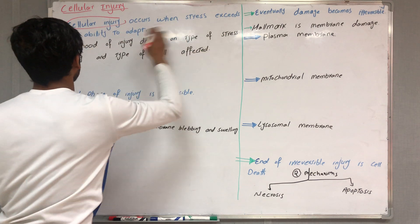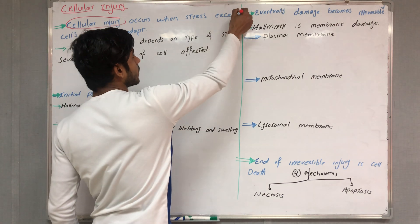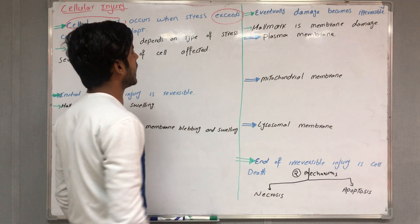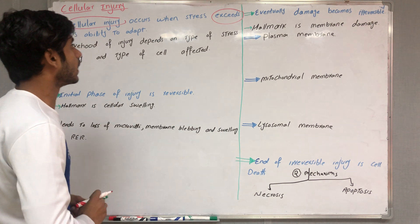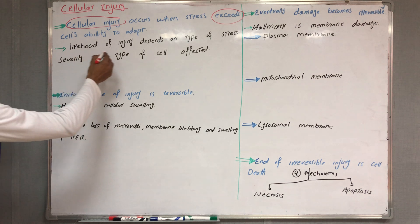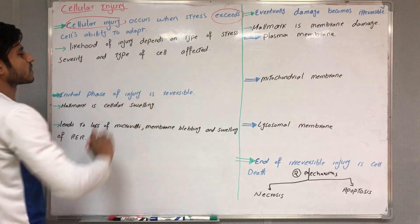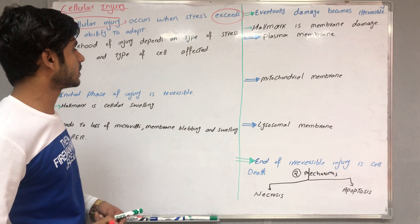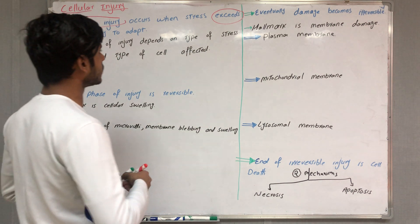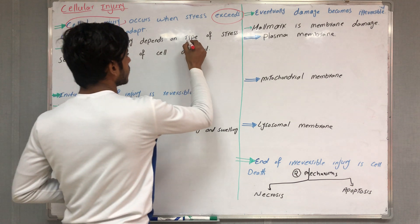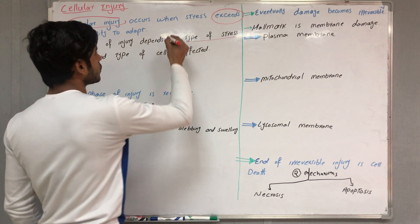How can we determine that stress has exceeded the cell's ability to adapt? The likelihood of injury depends on three things: the type of stress, the severity, and the type of cell affected. These three factors determine whether the exceed limit is reached.